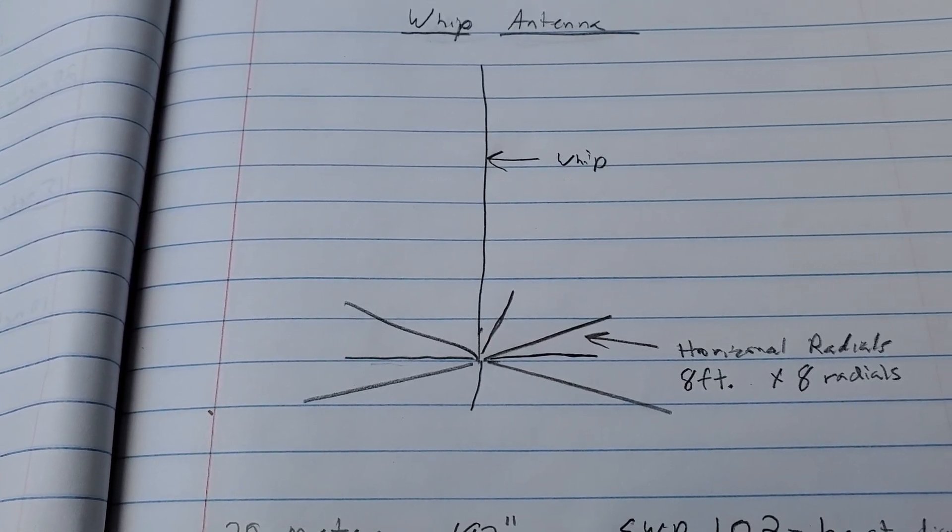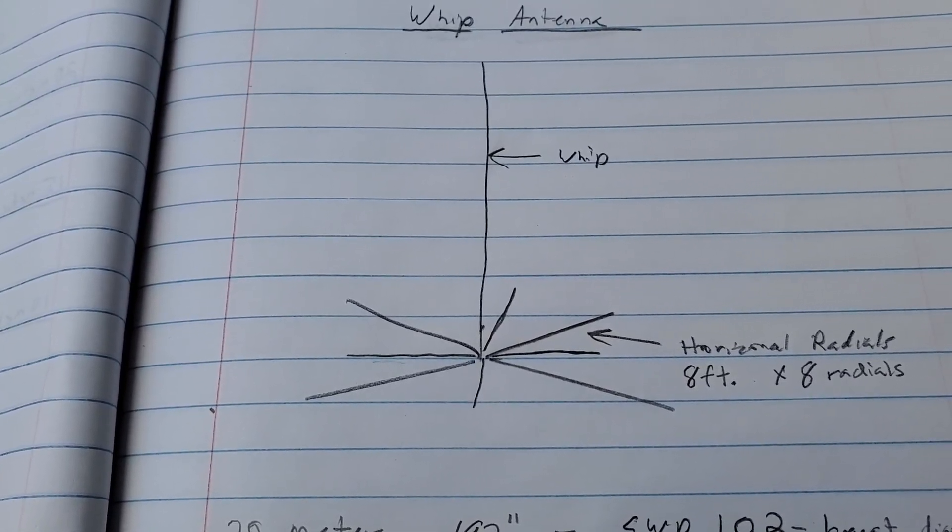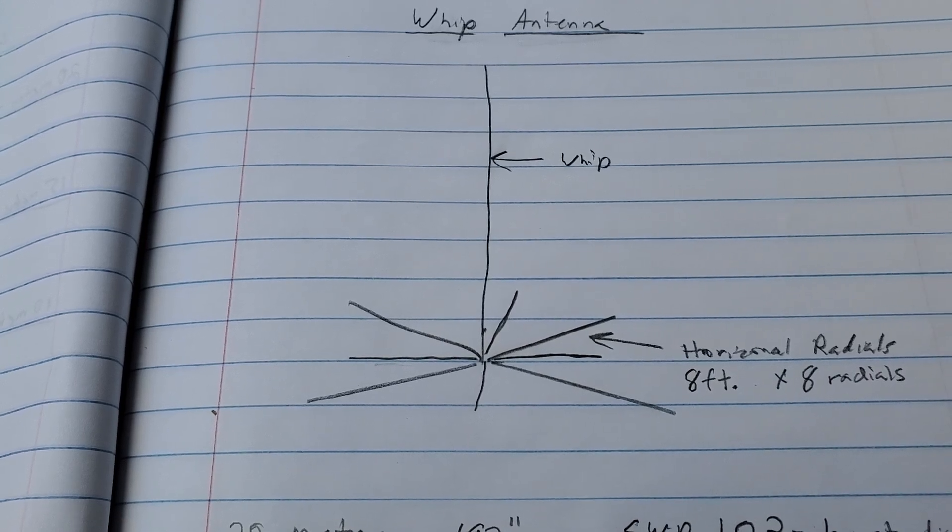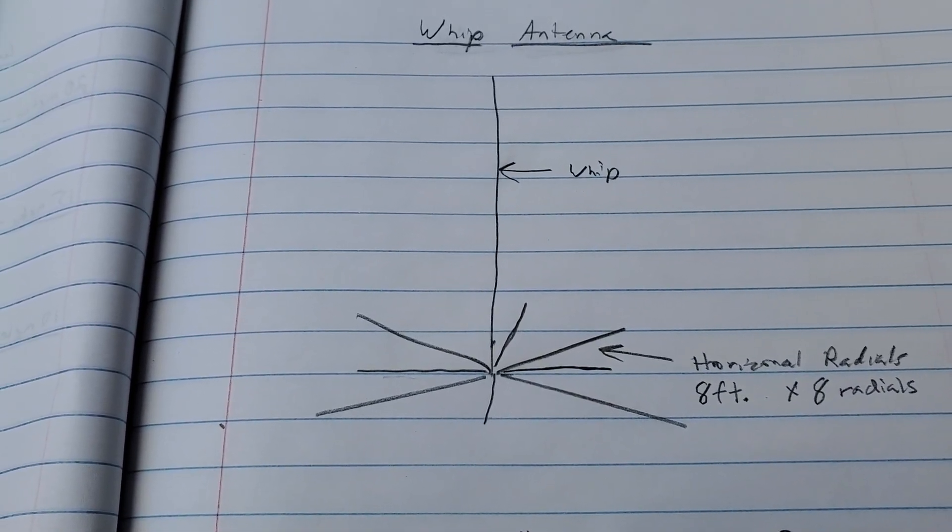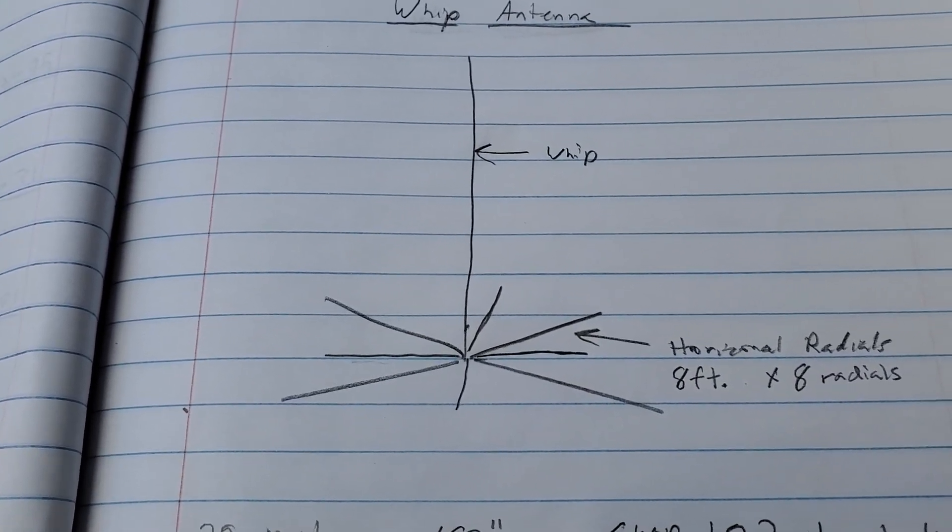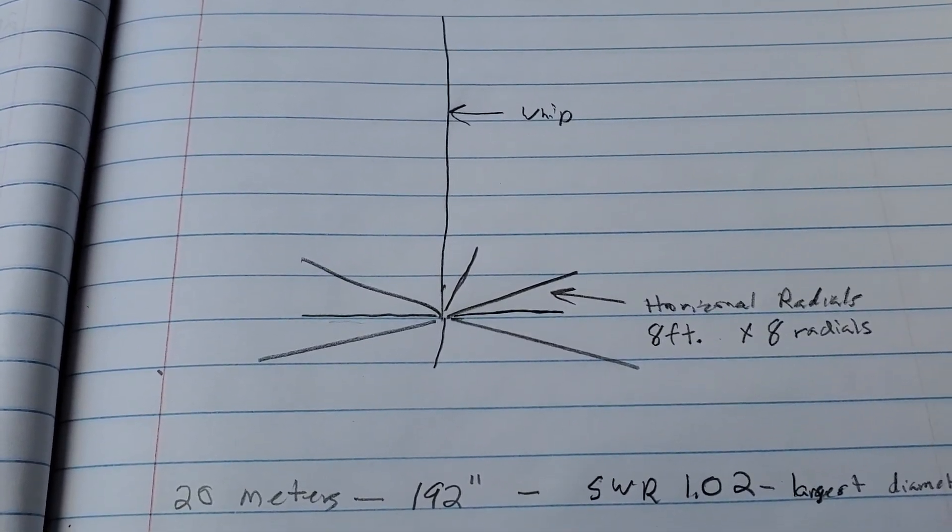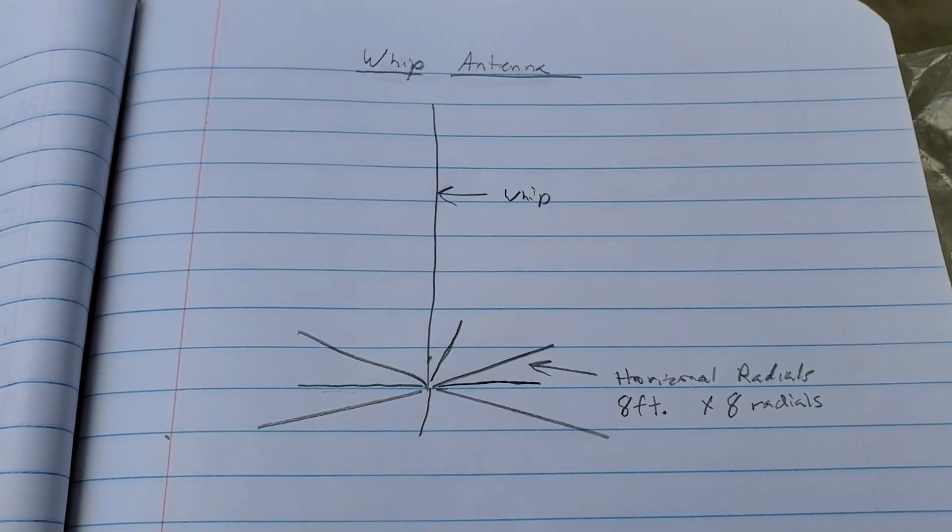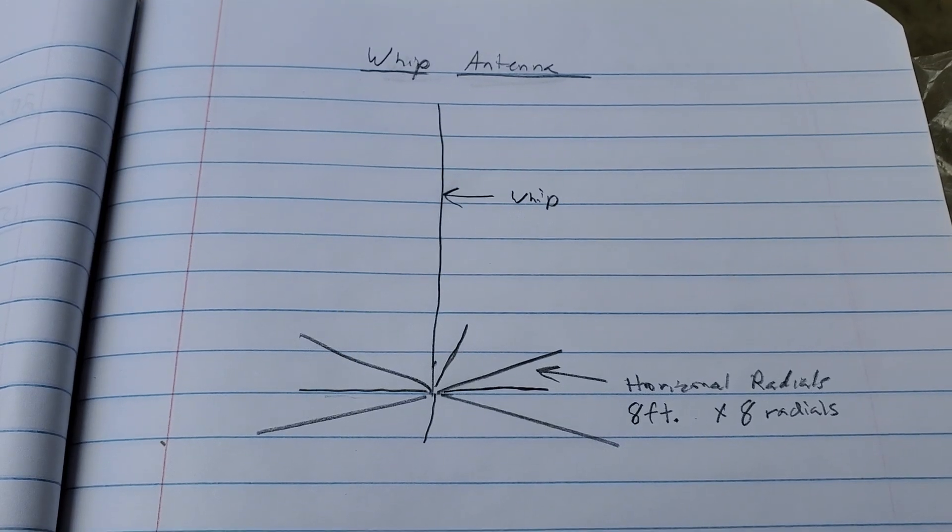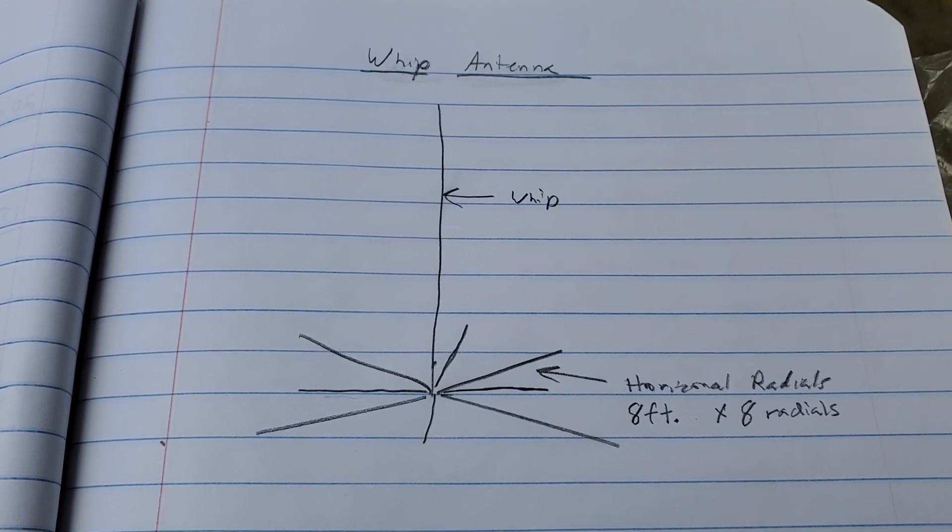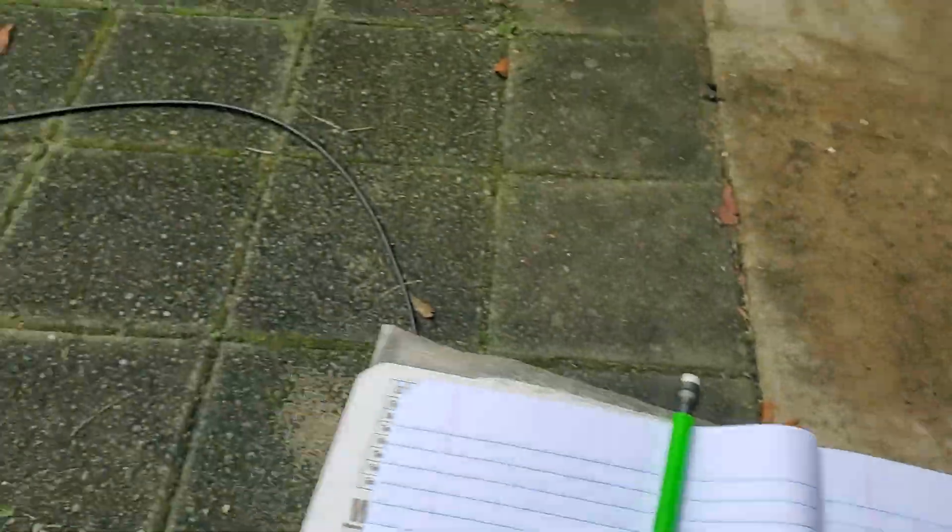It works really good. I've been able to make contacts all over, and we'll look at the secondary use of this antenna at the end of this video also, so stay tuned. Anyway, we've got the whip antenna and eight radials and a connector for our coax, so let's go look at the antenna now.